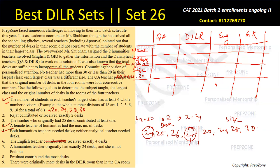Therefore English must have 24 desks, and the class size is 24 + 4 = 28. This means GK has 27 desks. The GK class size must be either 28 or 30; since 28 is taken, GK class size is 30.